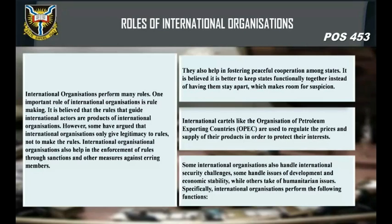International organizations perform many roles. One important role is rule-making — the rules that guide international actors are products of international organizations, though some argue IOs give legitimacy to rules rather than make them. IOs also help in the enforcement of rules through sanctions and other measures against erring members, and in fostering peaceful cooperation among states. It is believed it is better to keep states functionally together instead of having them stay apart, which makes room for suspicion. International cartels like OPEC are used to regulate prices and supply of products to protect their members' interests. Some IOs handle international security challenges, others handle development and economic stability, while others address humanitarian issues.